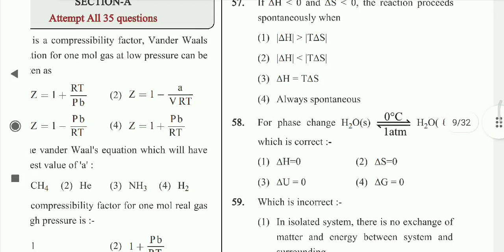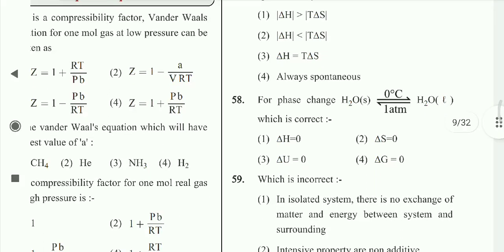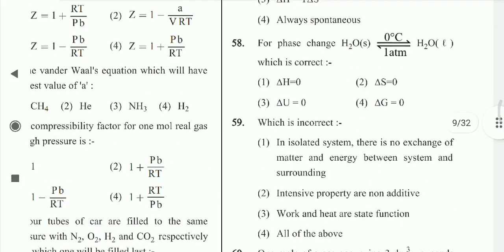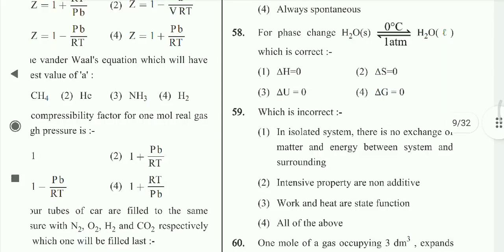Question 58: For the phase change H₂O solid at 0°C, considering the pressure of water and liquid — which statement is correct? Delta G here is 0 at equilibrium. Which statement is incorrect? Work and heat are state functions — no, this is a path function. Option 3rd is incorrect.